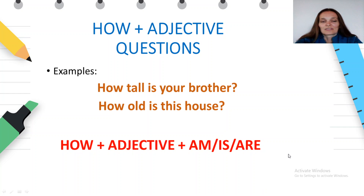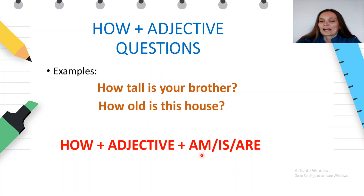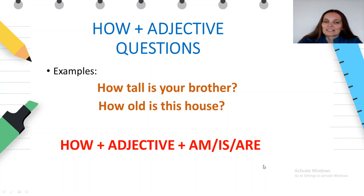At the beginning, let's read these examples first. How tall is your brother? How old is this house? As you can see, the question begins with the question word 'how.' Then we add an adjective, like 'tall' or 'old,' plus the forms of the verb to be — am, is, or are. I think the rule is very simple and easy, isn't it?